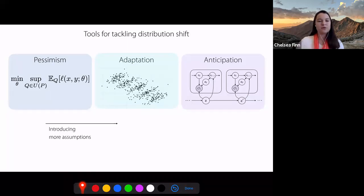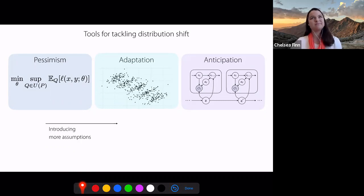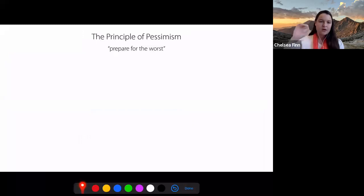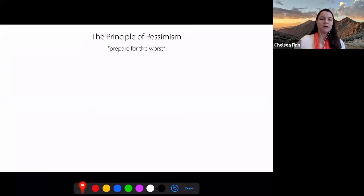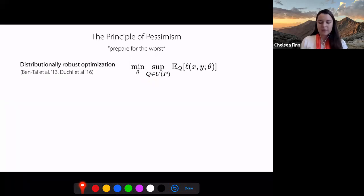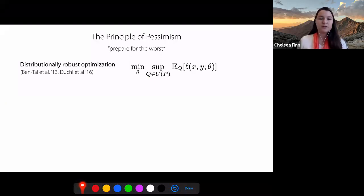As we go along, we're going to be introducing more assumptions about how the distribution is changing and the problem setting we're in, but also seeing more powerful performance as a result. So let's first talk about pessimism. The principle of pessimism is essentially that we're going to assume there is some class of distributions that we might shift towards, and we want to prepare for the worst case.